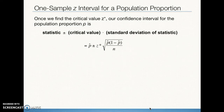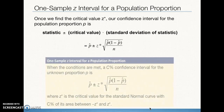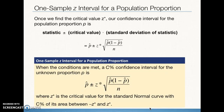We're constructing a one-sample Z-interval for a population proportion. We can also use the calculator feature 1-PropZInt to check our interval, but we still need to show all the work. When conditions for inference are met, we construct a C% confidence interval using the p-hat plus or minus Z-star times standard error format — essentially a formula on our formula sheet.